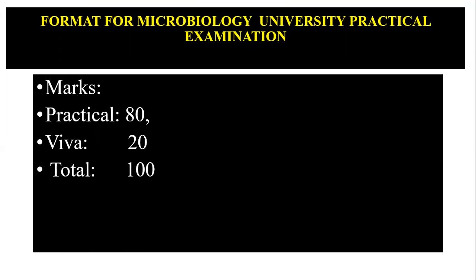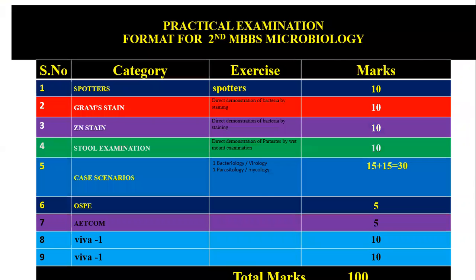The pattern will be the same for every university: practicals are 80 marks and viva is 20 marks, totaling 100 marks. The components are: spotters - 10 marks, Gram stain - 10 marks, Ziehl-Neelsen stain - 10 marks, stool examination - 10 marks, and two case scenarios — one from bacteriology/virology and one from parasitology/mycology — worth 15 plus 15, that is 30 marks.